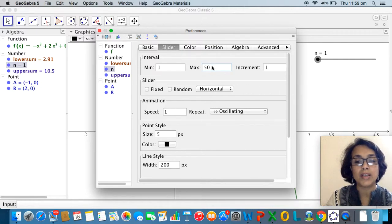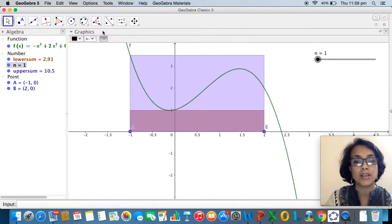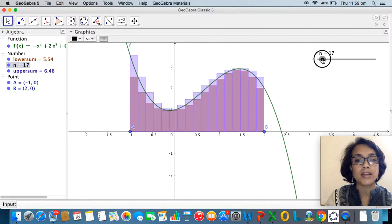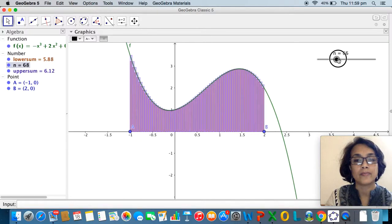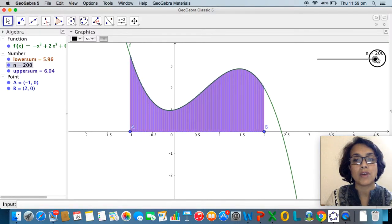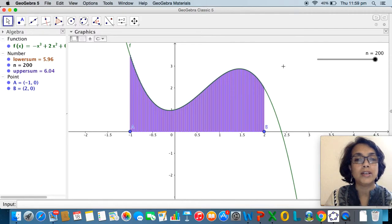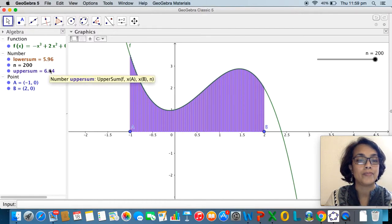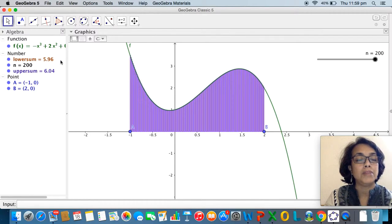And increase the number of rectangles to 200, so now instead of 50 I have 200 rectangles approximating the area under the curve for both the upper sum and the lower sum. As I increase n now you will see that by the time I reach 200 I can practically not make out the difference between the lower and the upper sum.